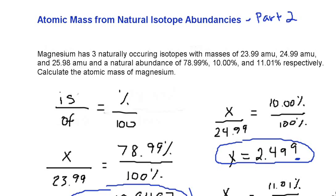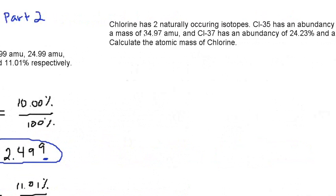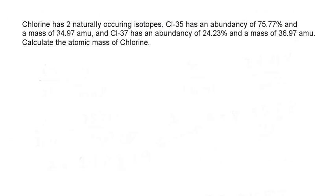In this video, we're going to find the atomic mass from the natural isotope abundances. This is part two, so I'm going to provide another example on how to do this. Here's the question.